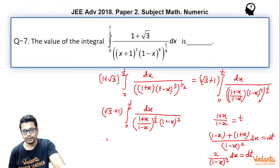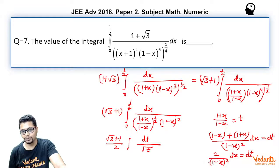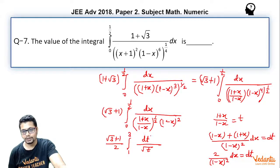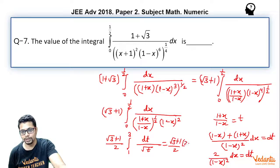So you may write (√3 + 1)/2 times the integral of dt/√t, where the limits change as follows: as x = 0, the lower limit becomes t = 1; and as x = 1/2, the upper limit becomes t = 3.